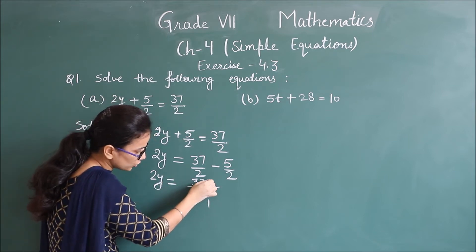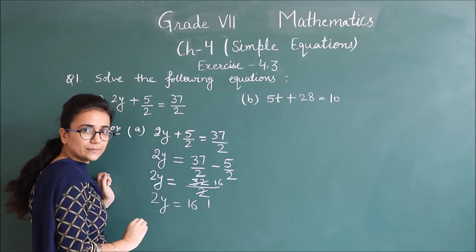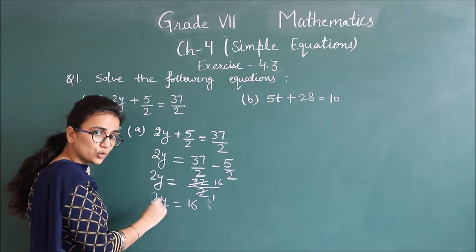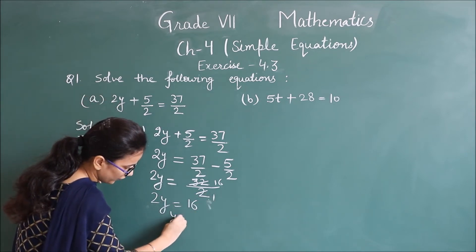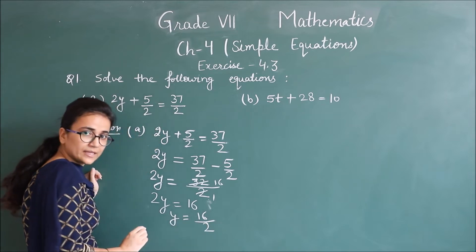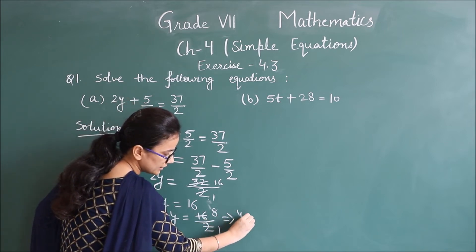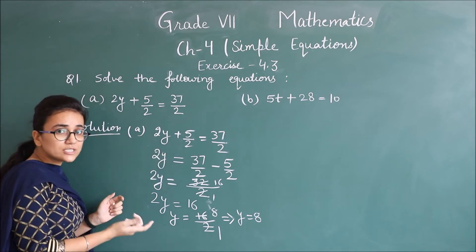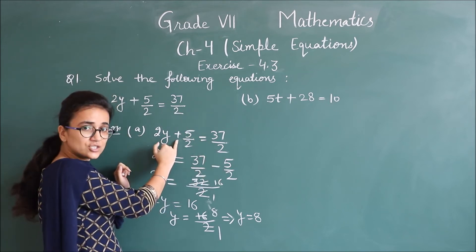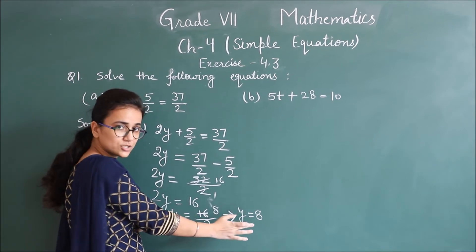इससे 2 cancel करते हैं — 2y आ गया, जो कि 16 है। Clear? अब इस 2 के साथ y multiply में है, इसे हटाने के लिए दोनों तरफ 2 से divide करते हैं। Directly इस 2 को वहाँ लेकर जाते हैं — y is equals to 16 upon 2. यह 2 यहाँ multiply में है तो वहाँ जाके divide में। तो यहाँ से y की value आ गई: 8. इस question को हमने transposition method से किया — जो भी left में है उसे right में shift कर रहे हैं, sign change हो रहा है, और last में variable separate हो गया। y is equals to 8.